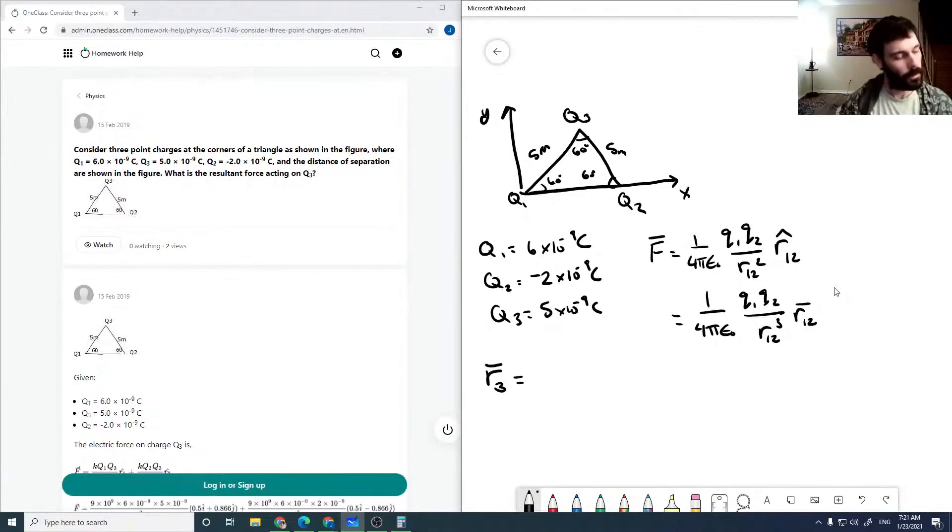R3 is the tricky one. If we draw the triangle from the origin, this is 5 meters at 60 degrees. So this is 5 sine 60 and this is 5 cosine 60. 5 sine 60 is 4.33 meters.